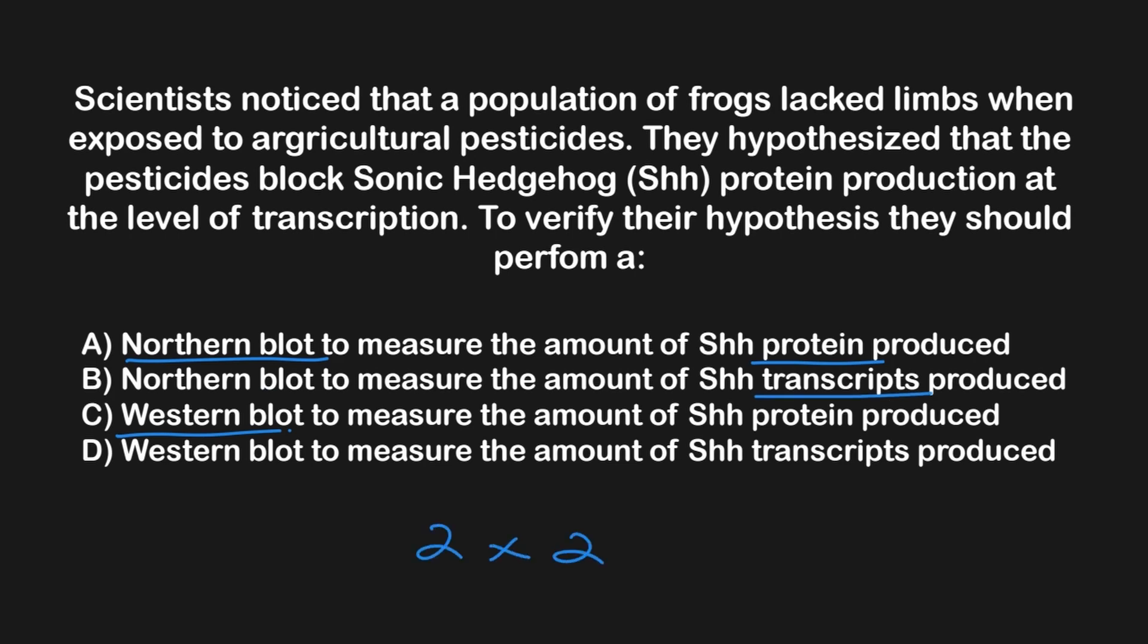To answer this question, we will again start with what we are measuring. In this case, it is transcription or the process of converting DNA to RNA. This means that we will need to measure the level of RNA in these frogs to see if transcription is being blocked. Again, using the SNOWDROP mnemonic, we can see here that we will need a northern blot to do this.